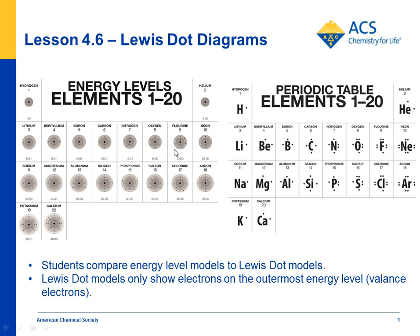You're going to have to explain to kids that even though they're spread out evenly in the energy level model, they're grouped in little pairs of two in the Lewis dot structure model. You probably need to tell students never put them in sets of two until you have to — until the four places are used up with one, then you can begin putting another one to make two in any given spot.